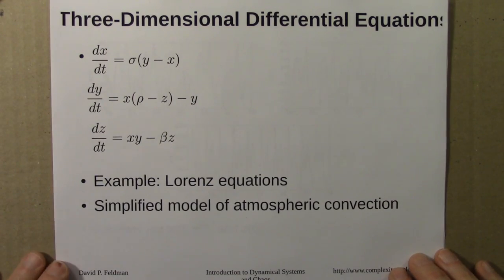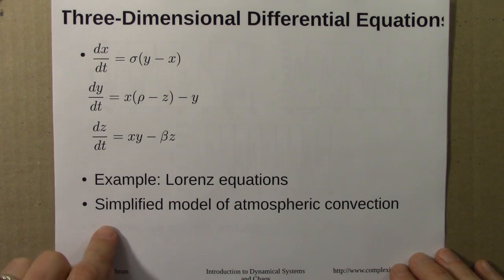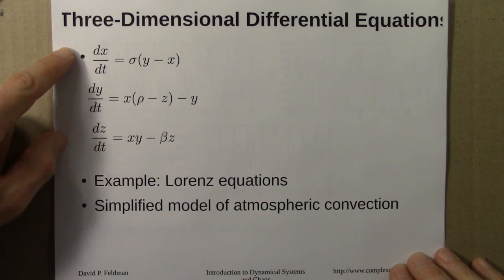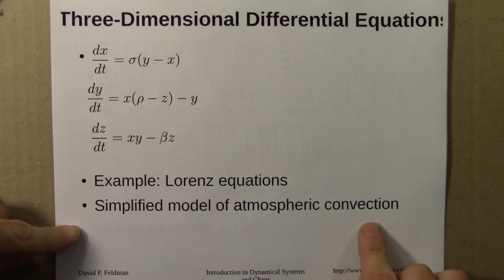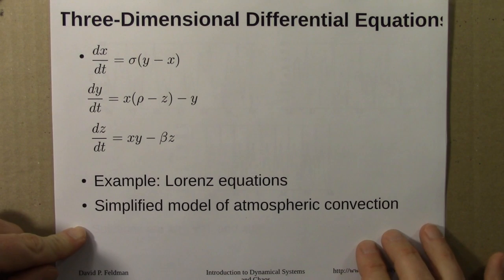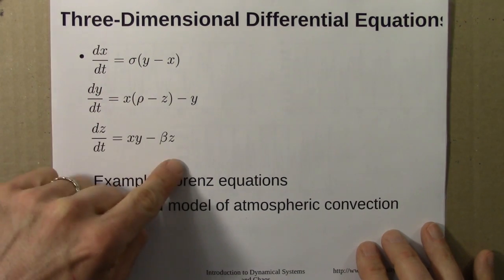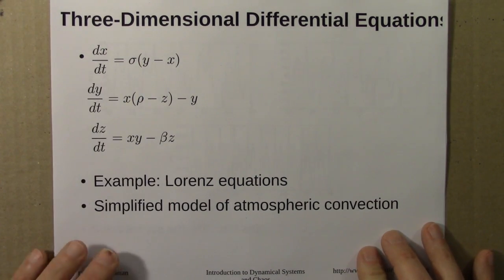Lastly, we looked at three-dimensional differential equations. The example I used was the Lorenz equations. So here are three differential equations. The variables are x, y, and z. This is a very simplified model of atmospheric convection. The physical origins of this model aren't important for what we want to do here. There are three parameters, the Greek letters sigma, rho, and beta. So this is a rule for how three things vary in time instead of two.